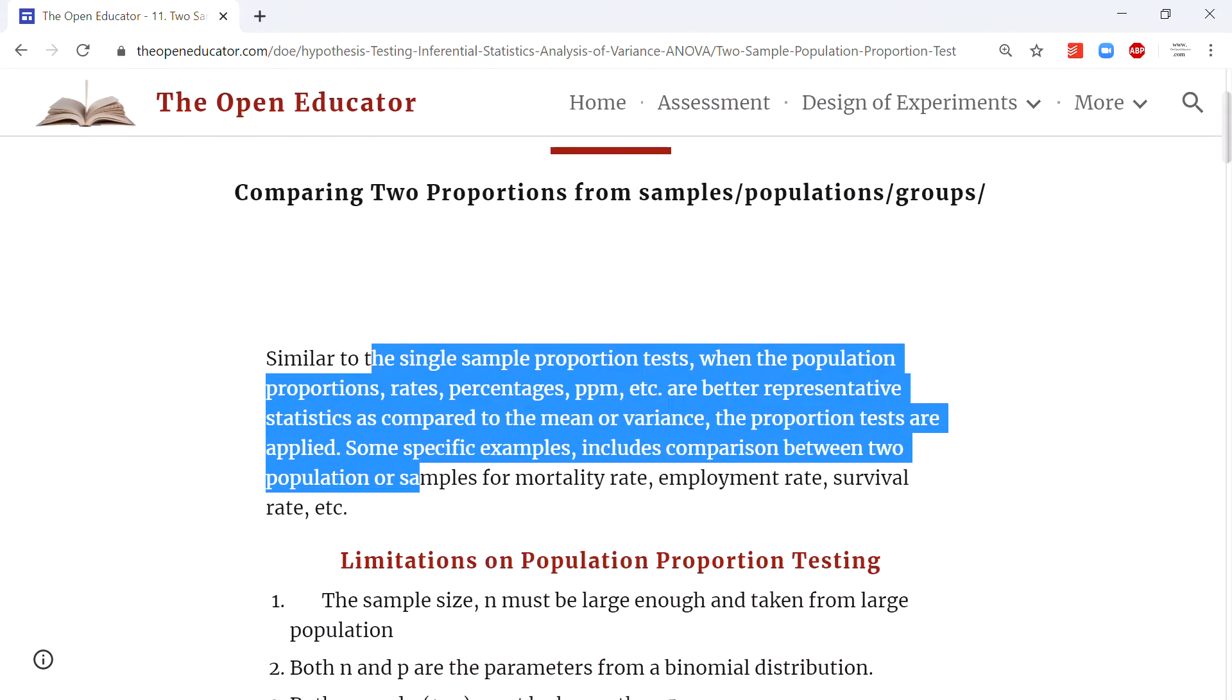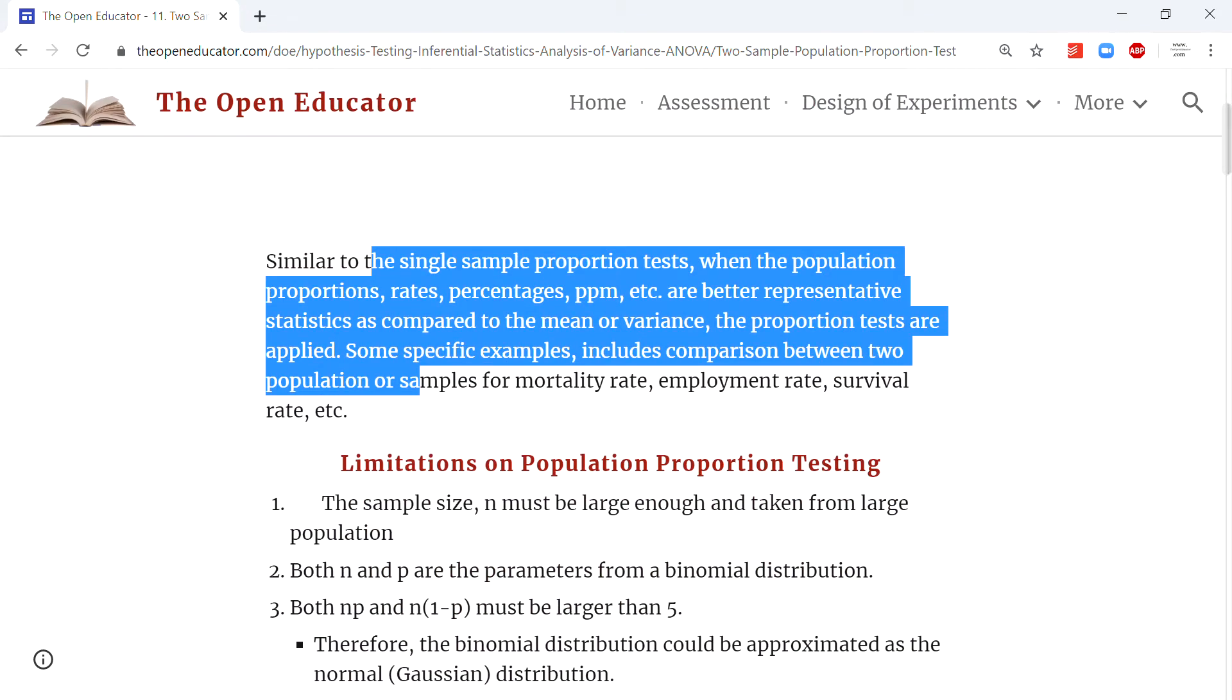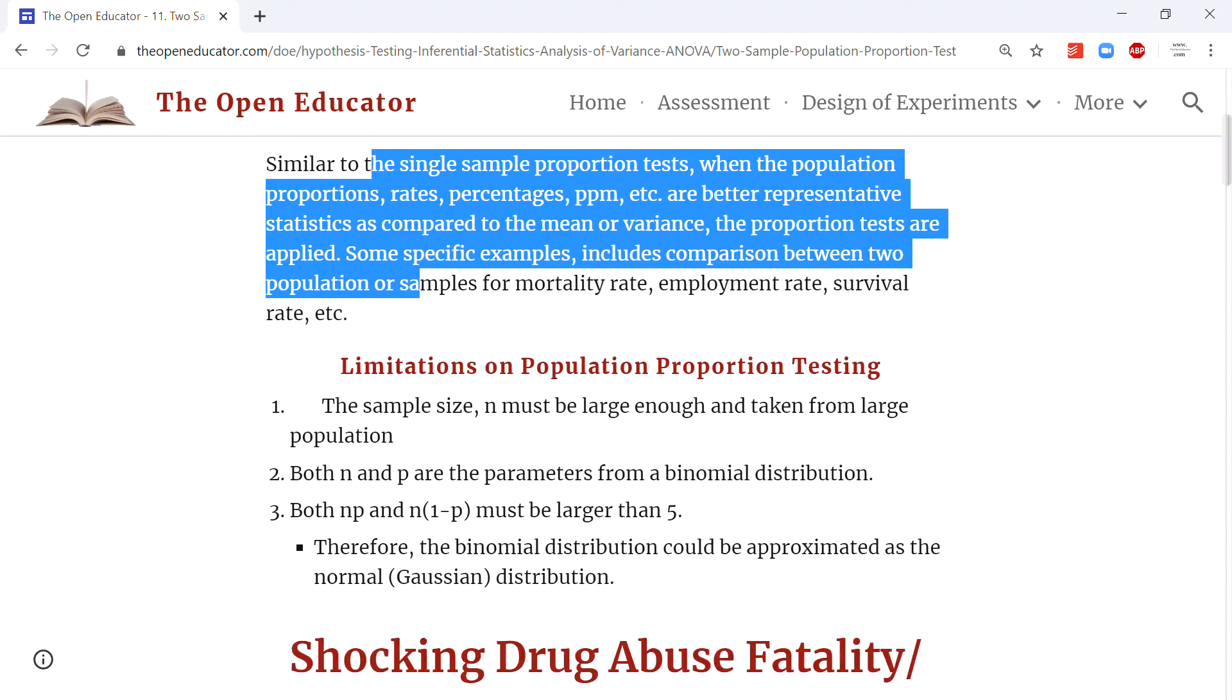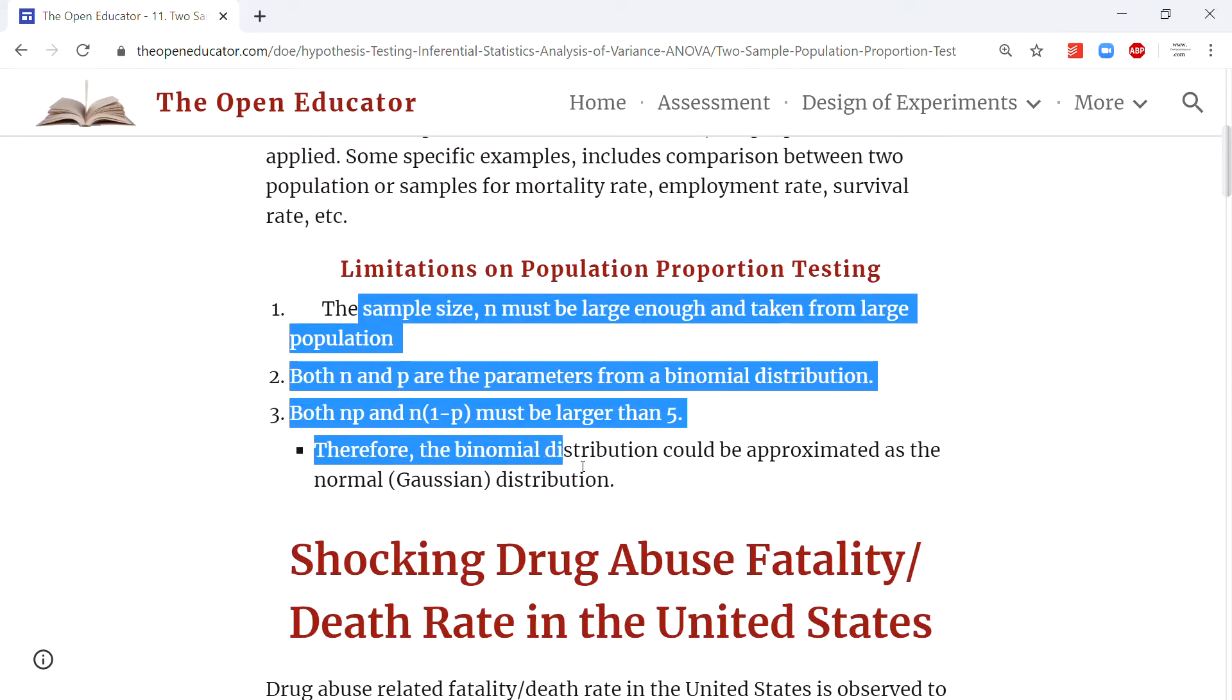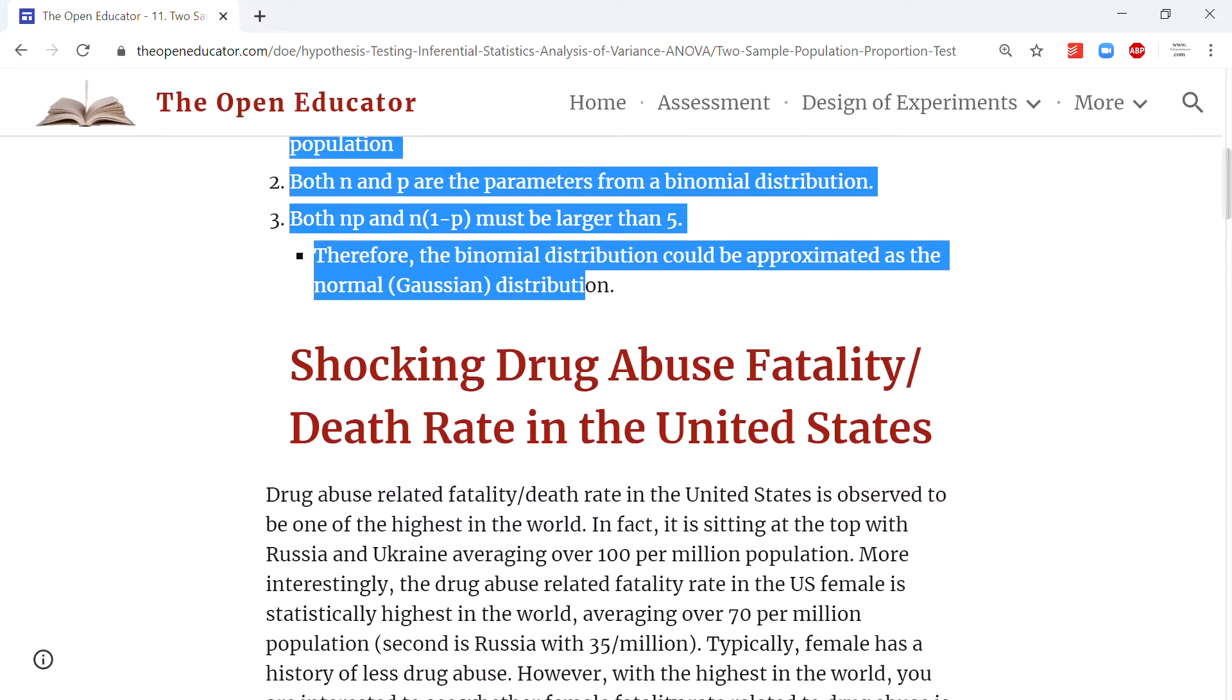When the rate is the appropriate measure, then these two-sample population proportion tests are used. For more details about this, check openereducator.com. There are a couple of limitations.